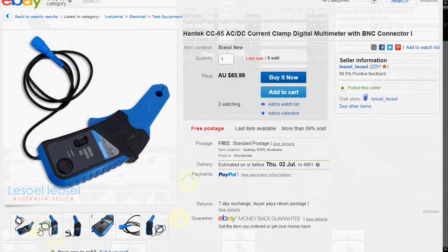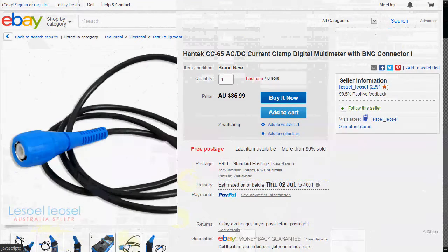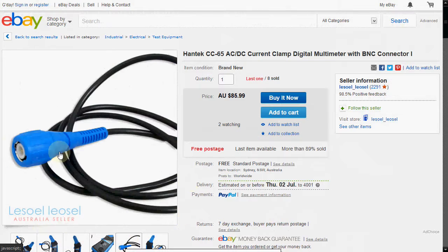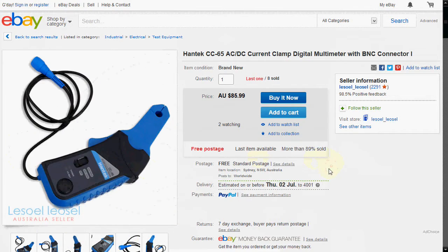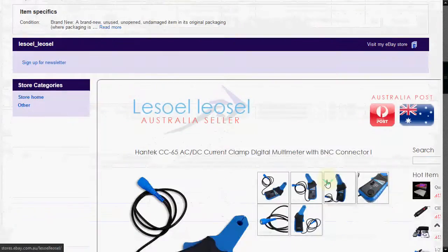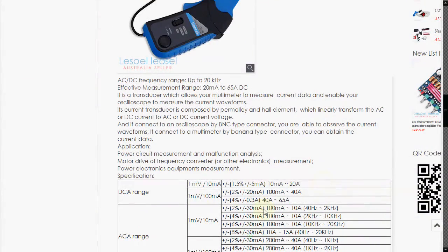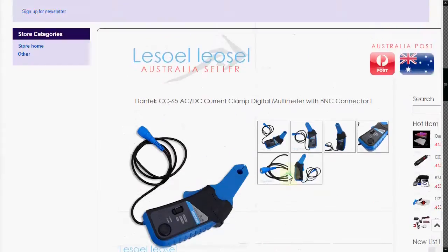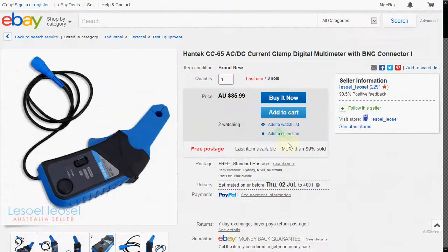And you can see their listing, they've got a few different pictures here. This is the BNC version, as you can see, and that's the one that I've purchased, and they've got some of the specs and things down here. But I'll take you to the Hantec website in a second and we can read the specs off that. It's a little bit easier to read.